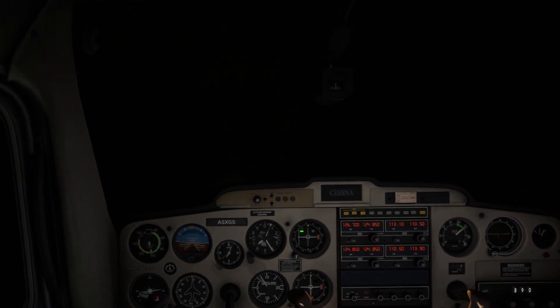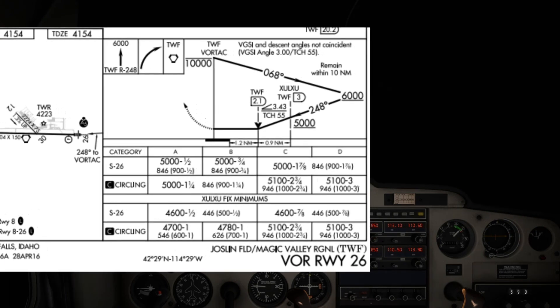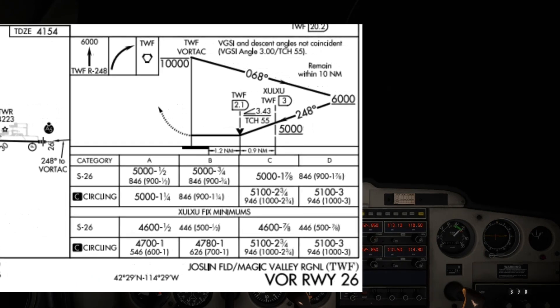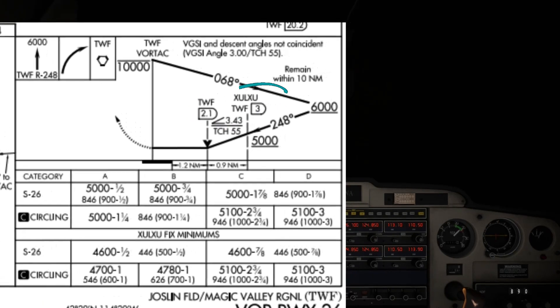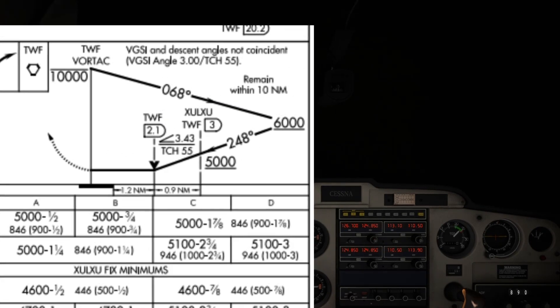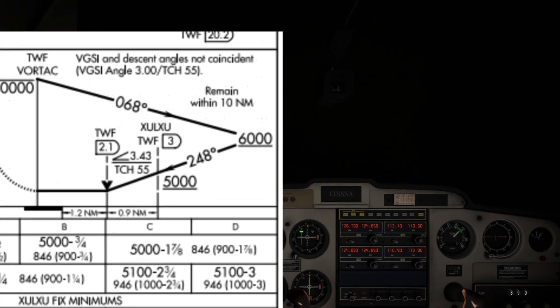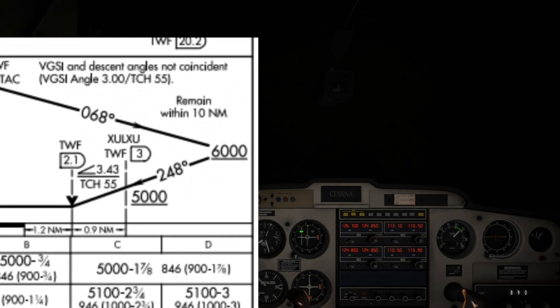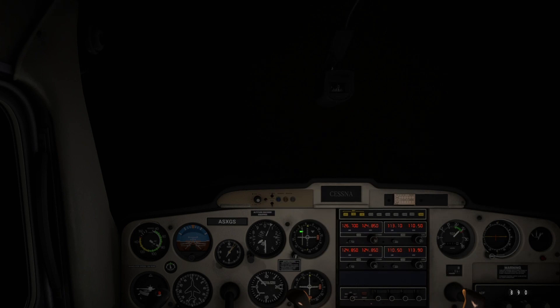Since we are currently flying away from the Twin Falls Vortac, the to/from indicator shows a "from" indication, as illustrated by the upside down triangle on the CDI. In the profile view of the approach plate, we can see that the waypoint XULXU is three miles from the Twin Falls Vortac. We will know when we are at the XULXU waypoint once the CDI needle is centered on a heading of 248 and the Distance Measuring Equipment (DME) indicates we are three miles from the Twin Falls Vortac.